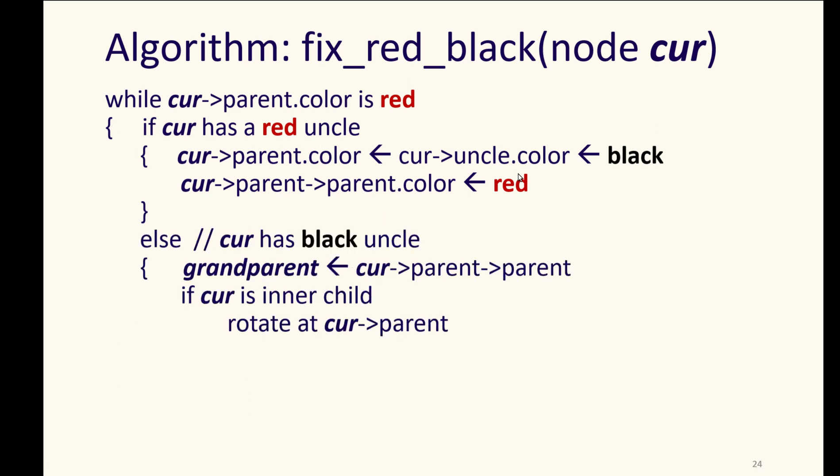Otherwise, current has an uncle, or a parent's sibling, that is a black marked node. Therefore, we have to do the rotations to this, where the grandparent gets.